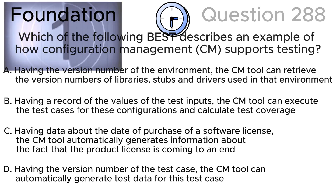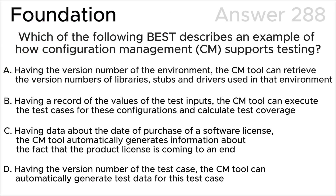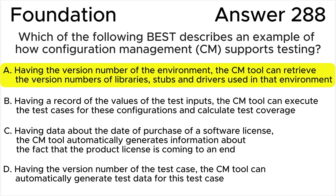The correct answer is A. According to the ISTQB syllabus, for a complex configuration item, for example a test environment, configuration management records the items it consists of, their relationships and versions. All the rest of the answers are wrong.